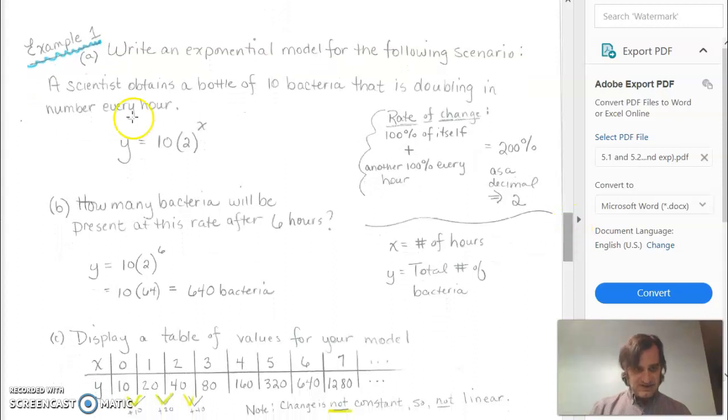So here's an example. It says a scientist obtains a bottle of 10 bacteria that is doubling every hour. So if we go back to that model, the starting amount here we start with is 10. Now it's doubling, which means at the end of the first hour we would multiply by 2. We take that number, and at the end of the next hour we would multiply by 2 again. So we're multiplying by 2 over and over.